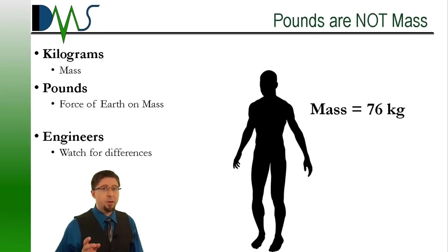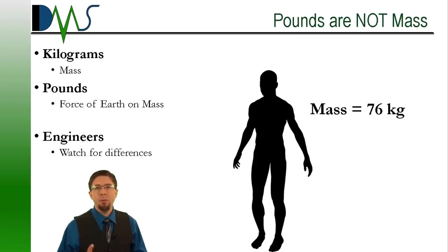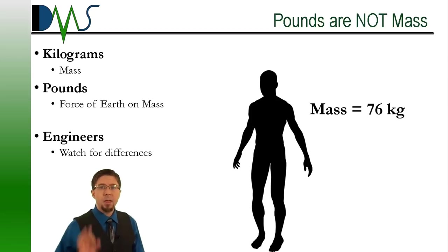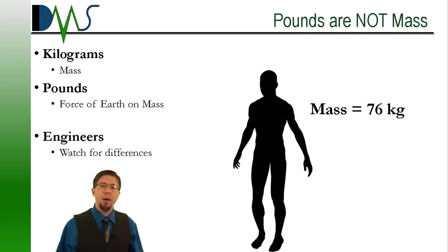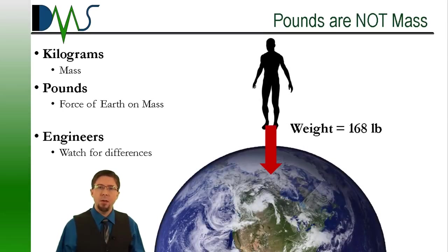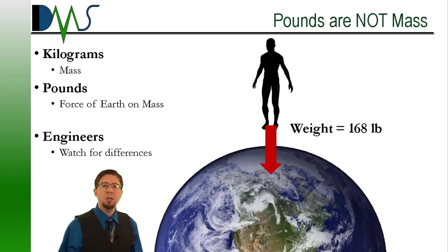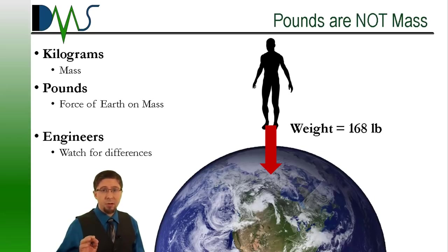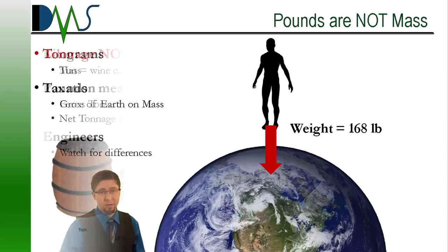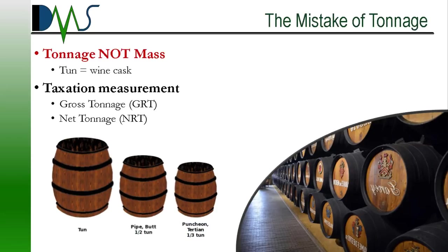A side note for everybody who pays careful attention to measurement systems: pounds and kilograms do not actually measure the same thing. Kilograms measure the mass of an object. Pounds measure the weight, which is the force of Earth's gravity as it pulls on the mass of that object. For some engineering calculations, this is a critical difference between the two systems of measurement.